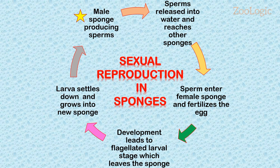Now look at the cycle here. Starting from the point marked by a star: sperm are released from the sponge through outgoing water from the osculum. The sperm then make their way into another sponge through incoming water via the ostia. The choanocytes trap the sperm cells as they flow through the interior of the animal. The sperm are then delivered to the eggs by the amoebocytes. Eggs are stored within the mesohyl, and that is where fertilization takes place.